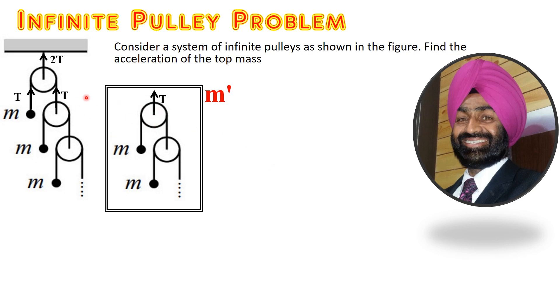Force on this pulley would also be T. This whole string is a single string. Tension is T upwards. Here tension T is downwards on the pulley. Here tension T is upwards on this system.